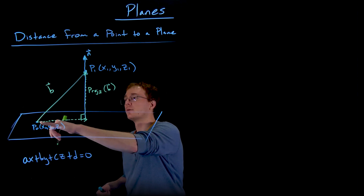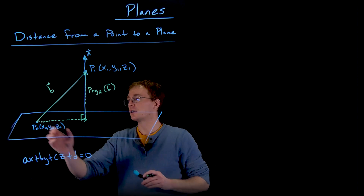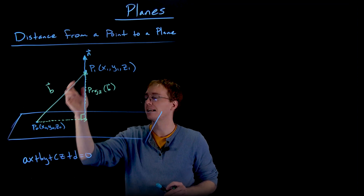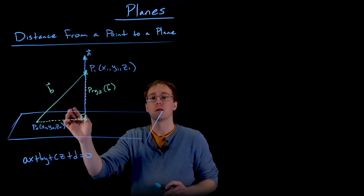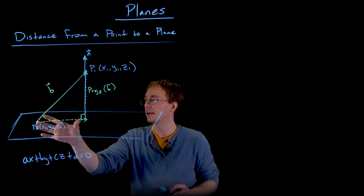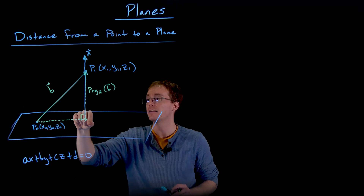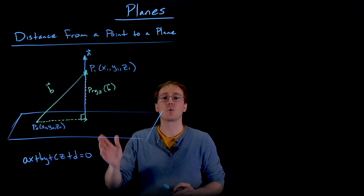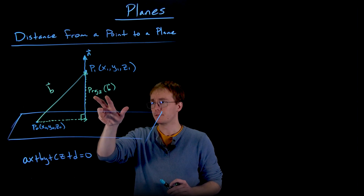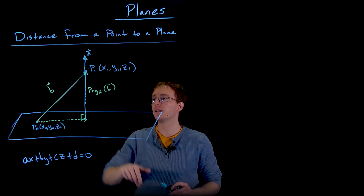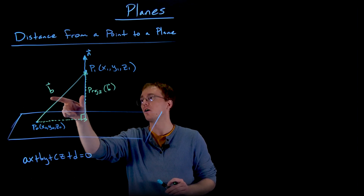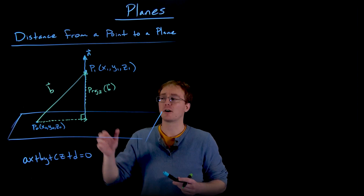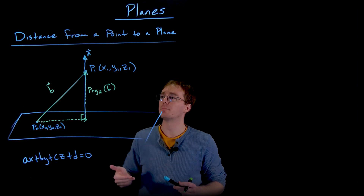Remember we can think of writing this vector b that goes from a known point on our plane to our point of interest as a sum of two vectors. One of the components will be the vector that is parallel and in our plane, and the other vector will be this component of b that is orthogonal to our plane. We can think of that component as the projection of our b vector onto our normal vector.